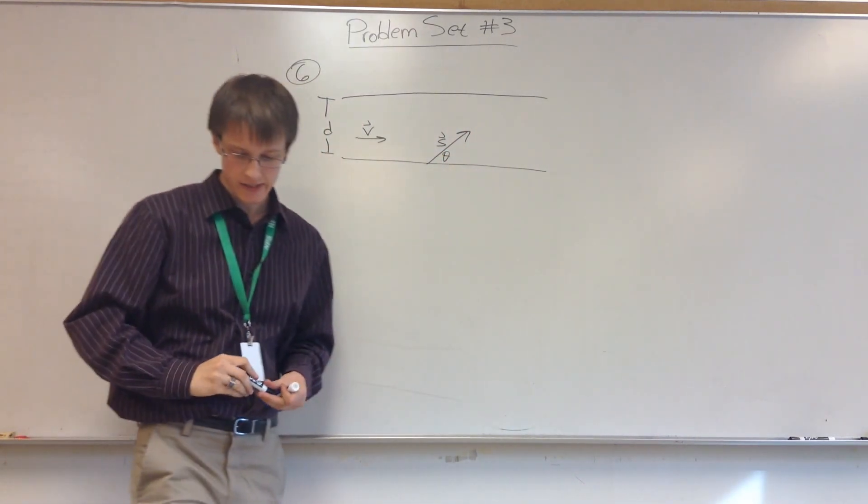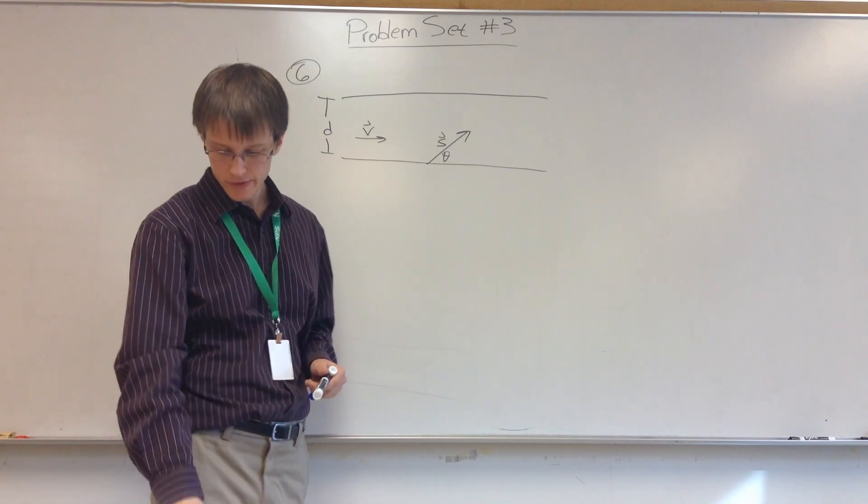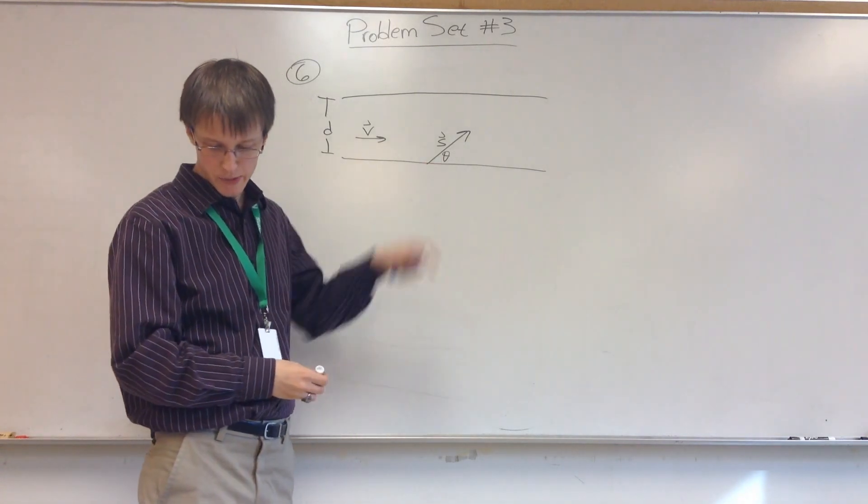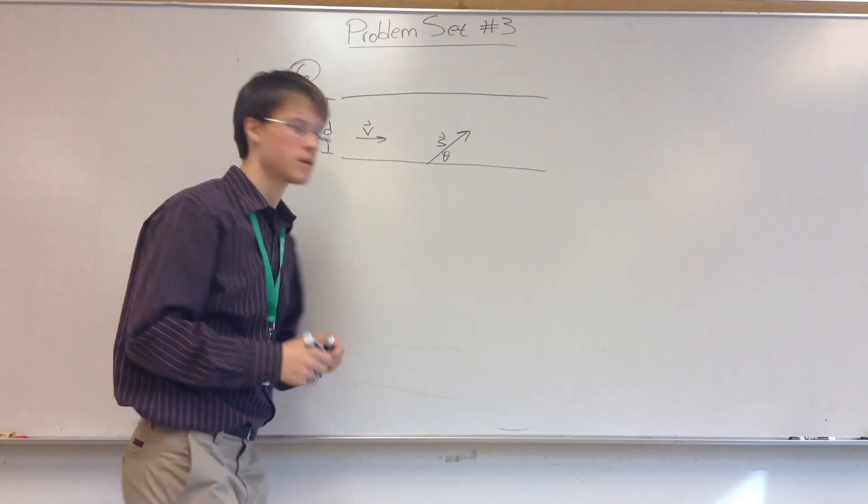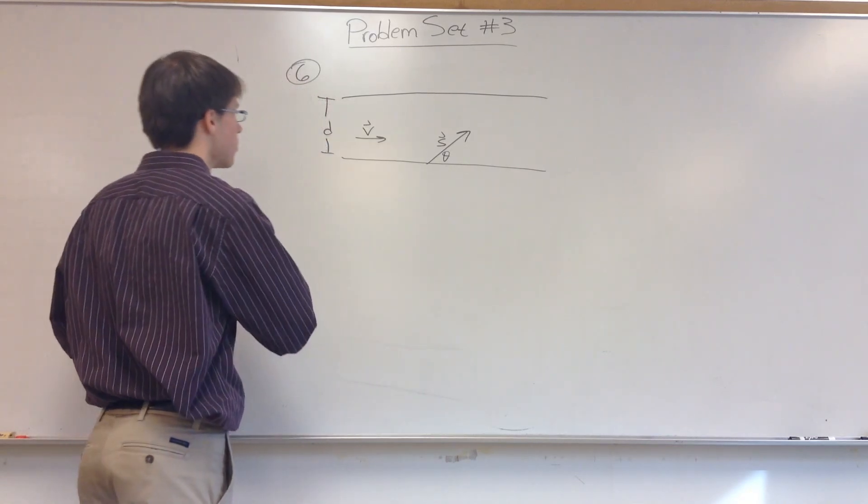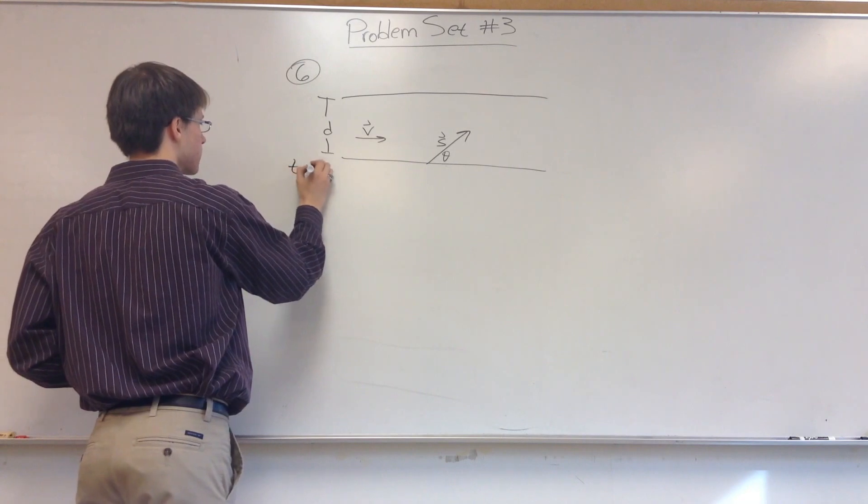So part C says, suppose the distance across the river is D. If the swimmer travels at an angle of theta with respect to the direction of the river, how long will it take to get to the other side? So that's the first part. We want to know time, T. That's what we're being asked for.